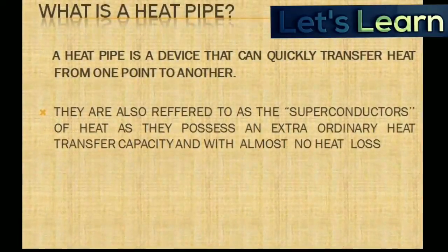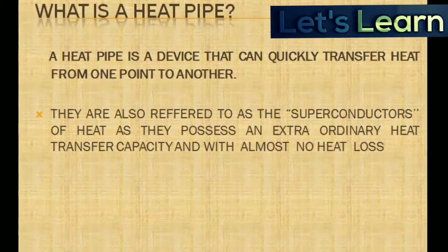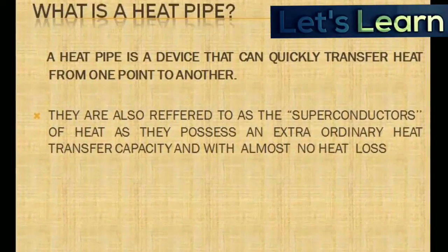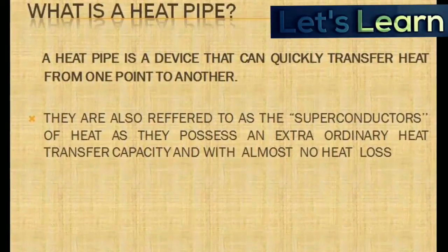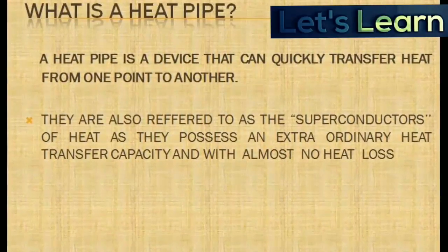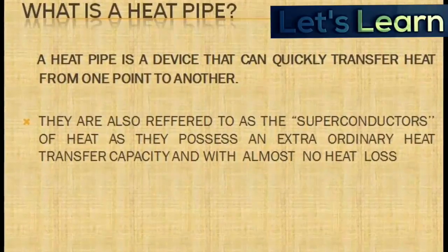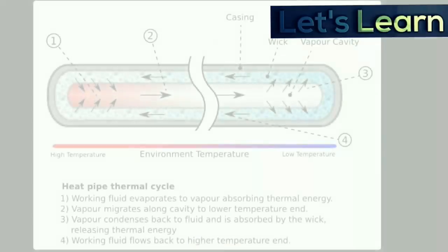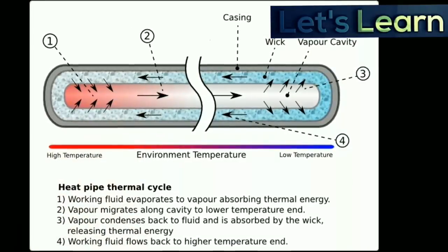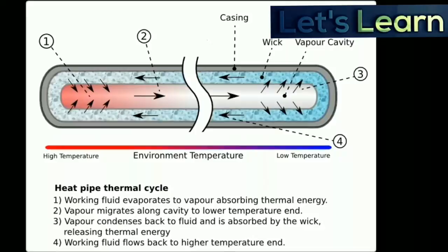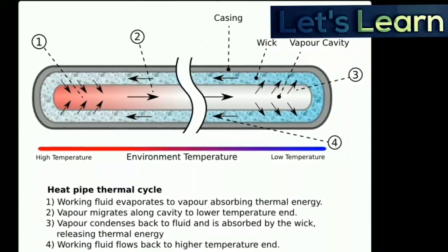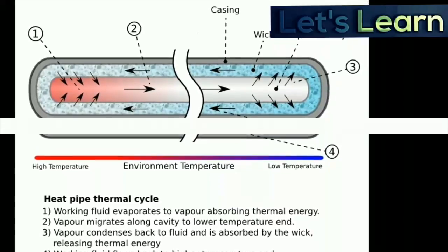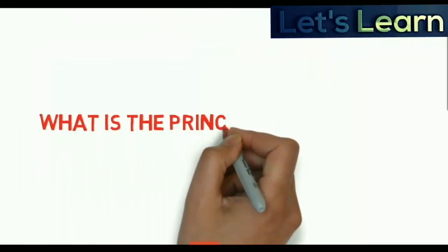The first question is: what is a heat pipe? A heat pipe is a device that can quickly transfer heat from one point to another. They are also referred to as the superconductors of heat, as they possess an extraordinary heat transfer capacity with almost no heat loss. A heat pipe is a heat transfer device that combines the principles of both thermal conductivity and phase transition to effectively transfer heat between two solid interfaces.